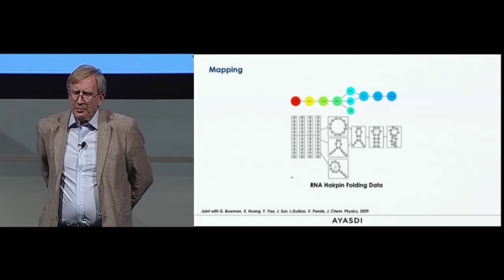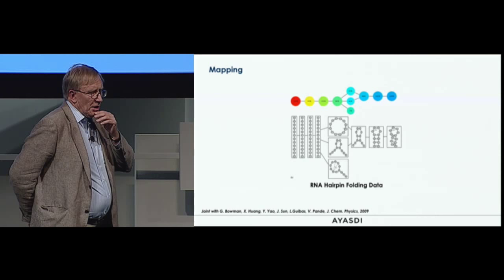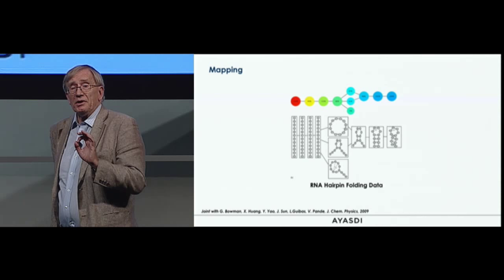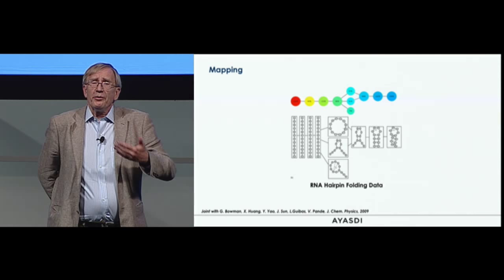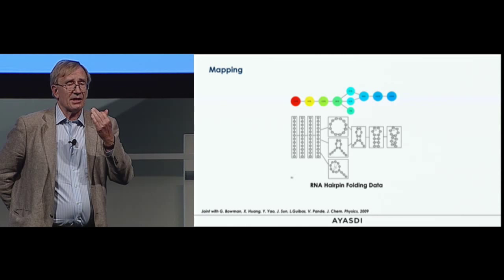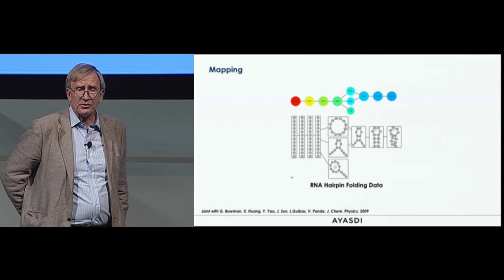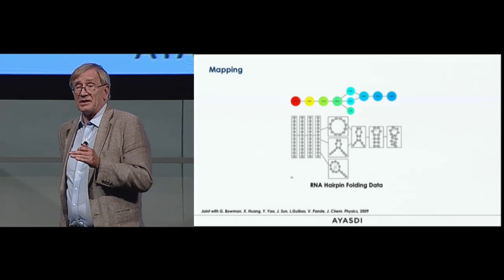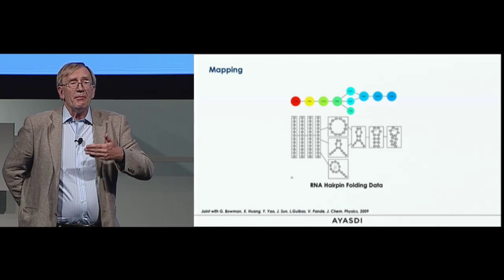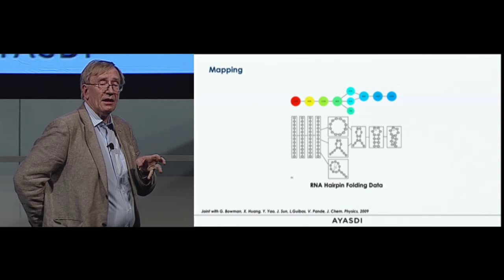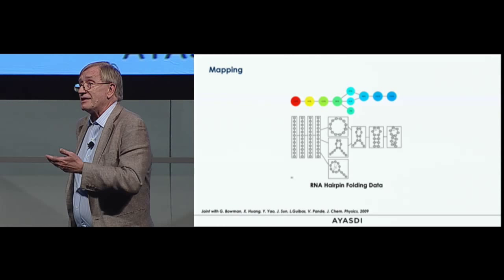Another example is hairpin folding data, with our collaborators at Stanford's folding-at-home group. The data set consists of conformations of a complex molecule. In the network there's a structure of a line with a little bit of noise in the middle. The scientists confirmed that those teal or light blue nodes in the middle were different trajectories to the folded state, which is what's being searched for. The method allows you to capture detail — weak signal within a much larger data set.